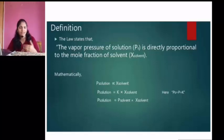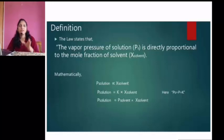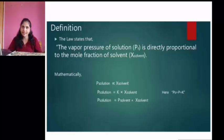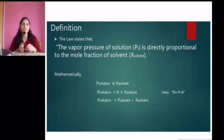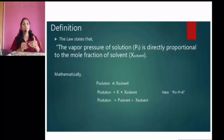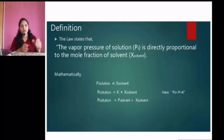Mathematically, it is represented as: p(solution), meaning vapor pressure of solution, is directly proportional to x(solvent), meaning mole fraction of the solvent. This is the relation observed by Raoult. That is, p is directly proportional to x. Mathematically, if we want to remove the proportionality sign, we need to introduce a constant. This constant should be related to vapor pressure — specifically, it should be the vapor pressure of that component present in the solution in its pure state. So after removing the proportionality sign, our relation becomes: p(solution) = k × x(solvent), where k is the vapor pressure of the solvent in its pure state.